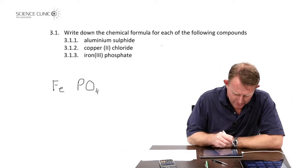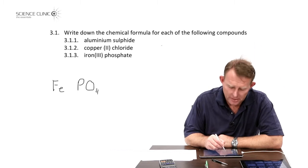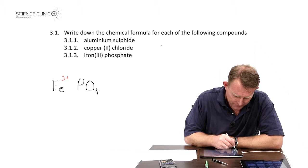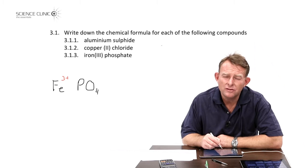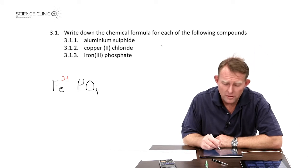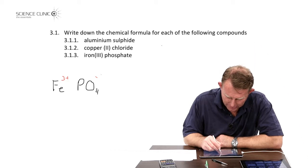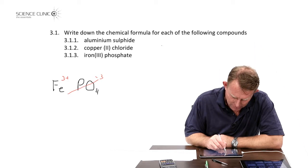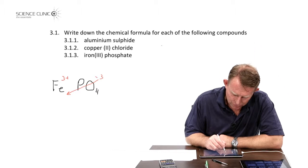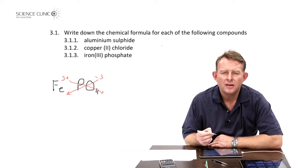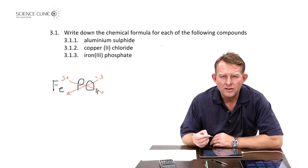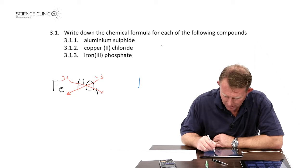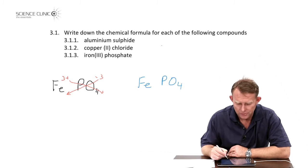And now we move on to the charges they acquire as ions. Iron, they tell us, gains a charge of 3+ - that is, once again, by the Roman numerals in the bracket behind it. Phosphate is one of the things you need to learn: the name of the ion, how to spell the name, what the formula is. You'd also need to learn off by heart that it requires a charge of minus 3. So we're now going to go to the crossover stage. The 3 from the phosphate would go to the iron and the 3 from the iron would go to the phosphate. But in this case, we're crossing over numbers which are equal. So in the end, the ratios between these ions when the compound is formed is a ratio of 1 to 1. So our final answer then would be iron, FePO₄ for the iron phosphate.